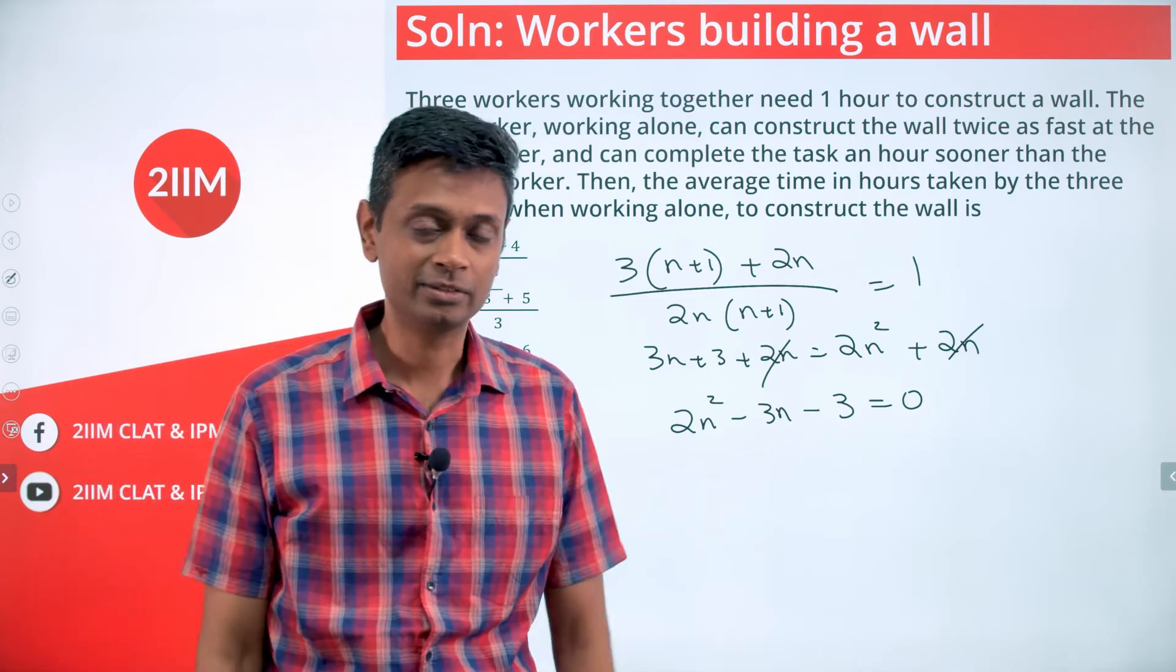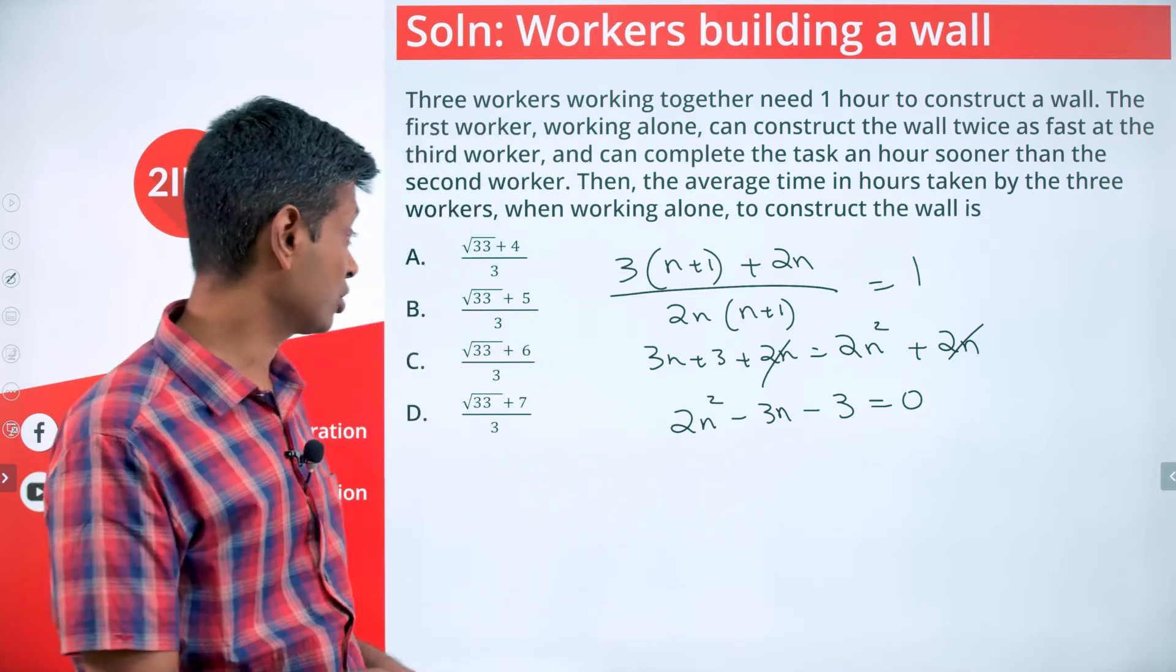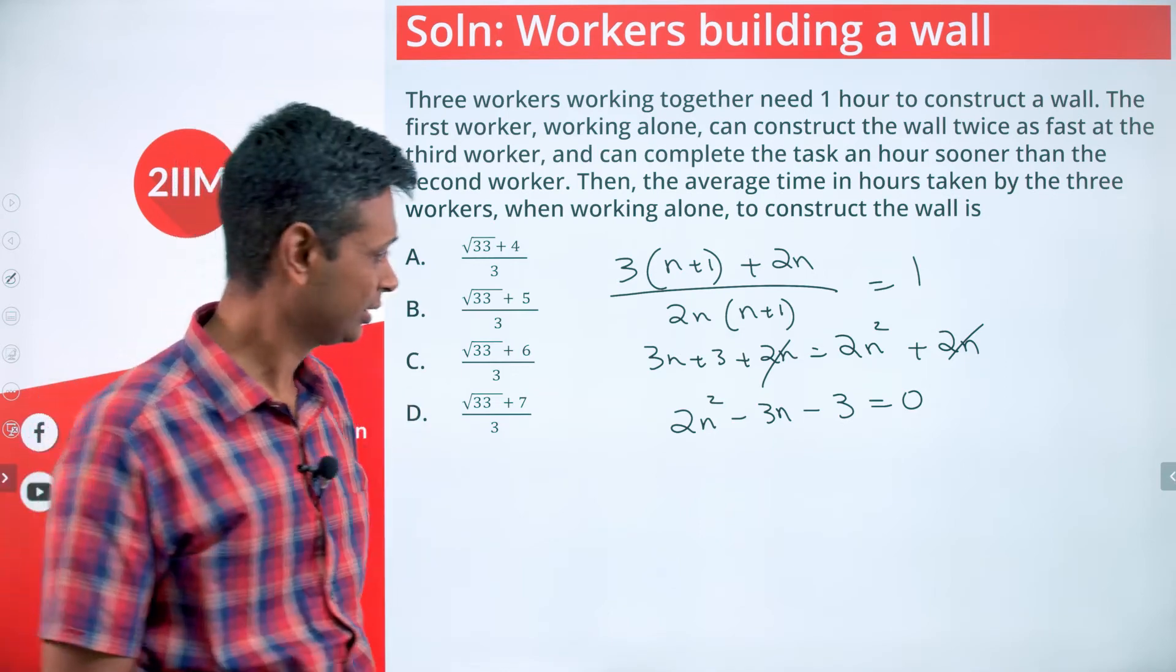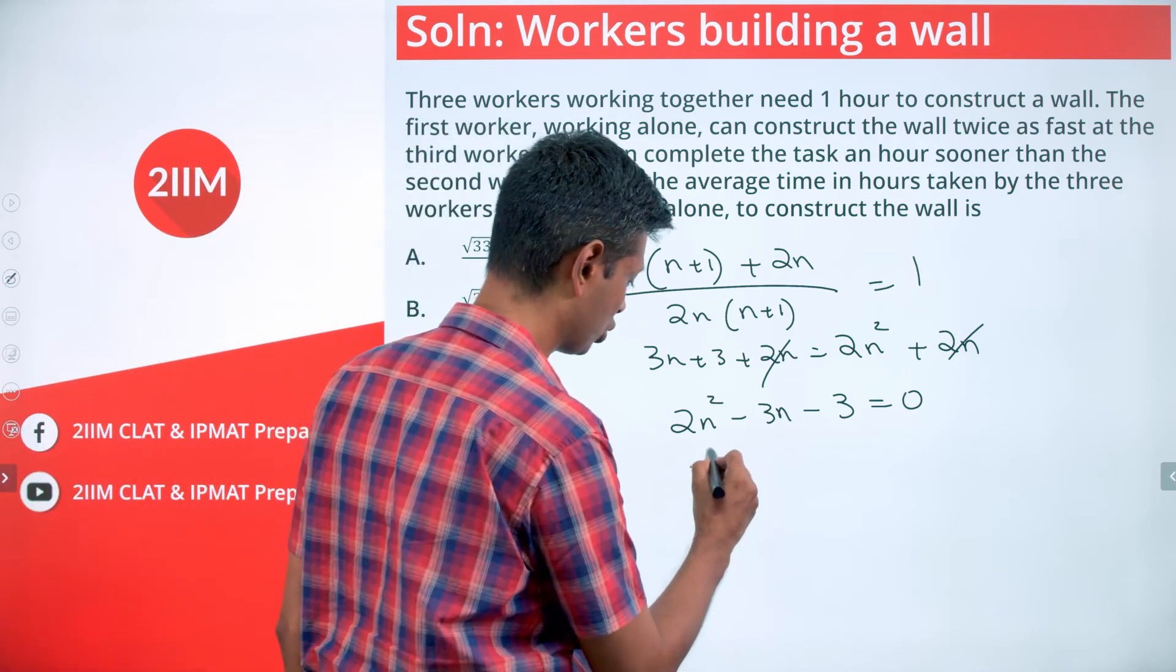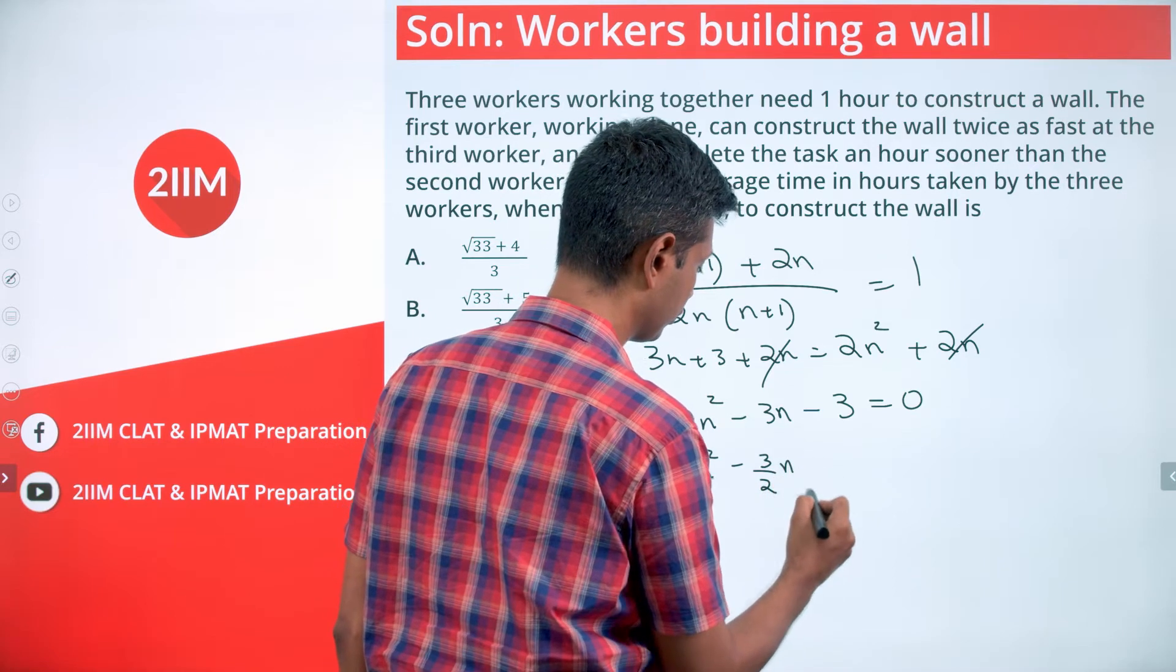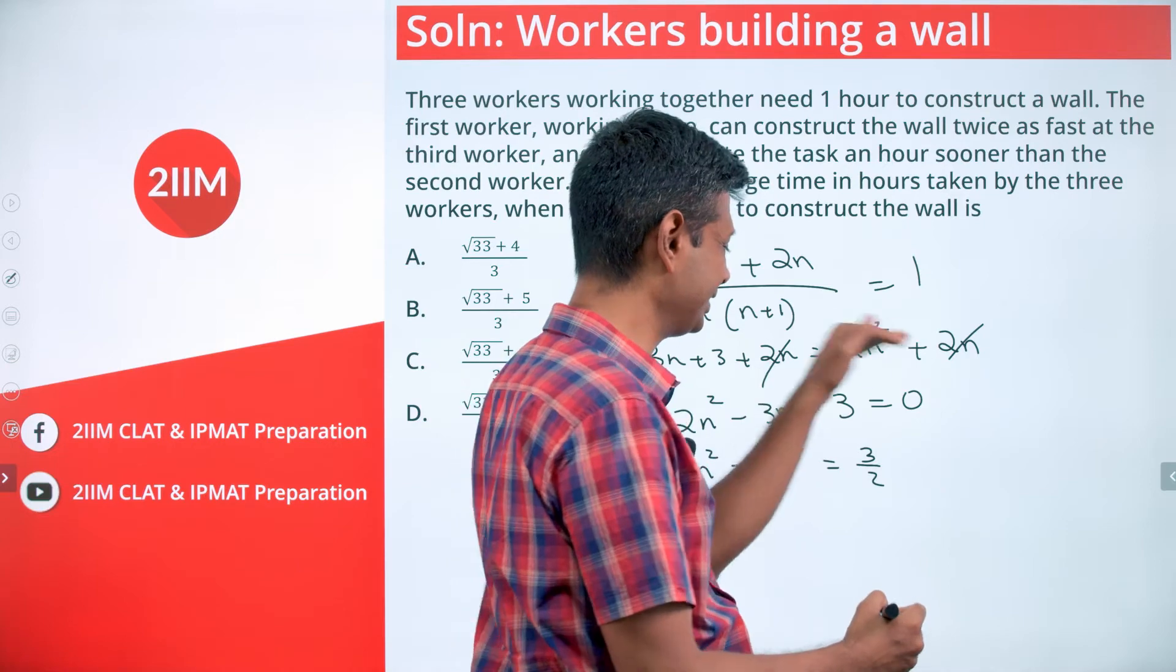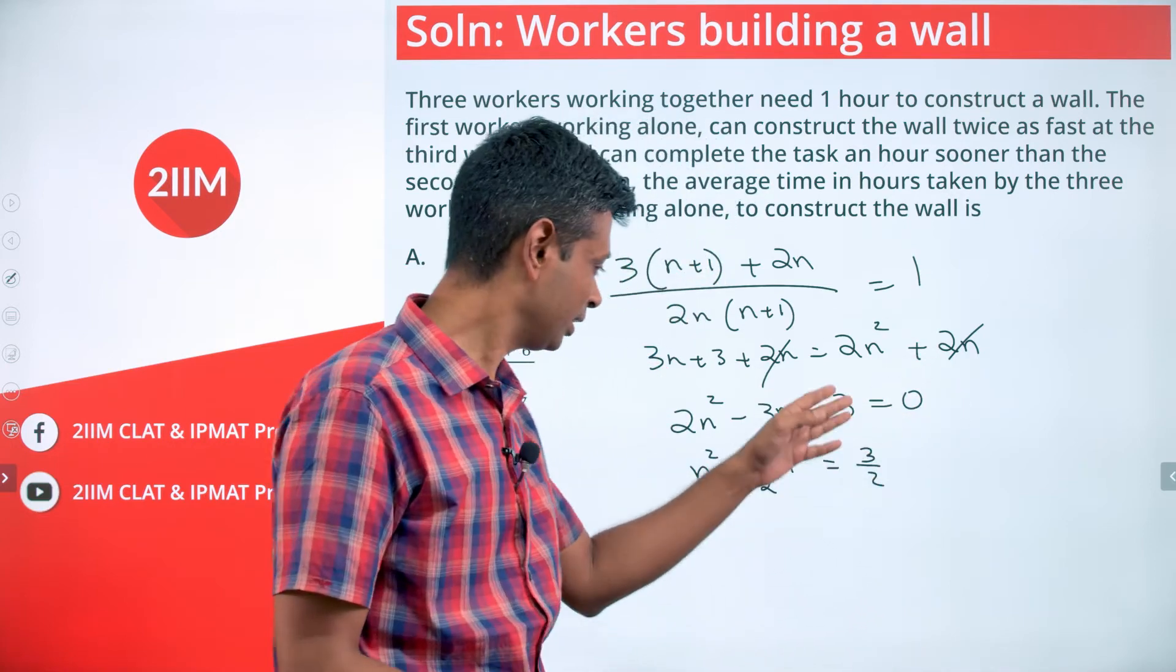2n disappears. We have 2n^2 - 3n - 3 = 0. Straight away, this one doesn't get factorized. And we kind of knew it won't get factorized by just looking at this number. So we're going to have to resort to completion of squares.